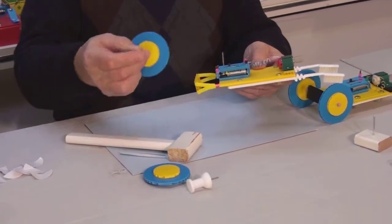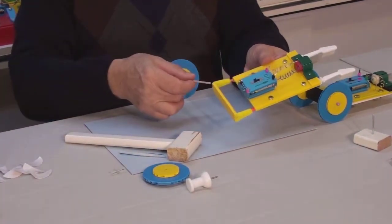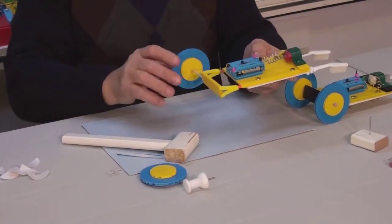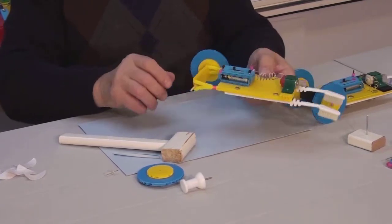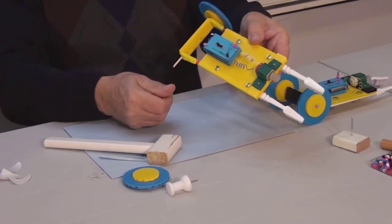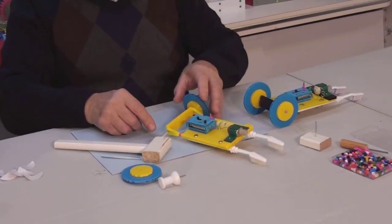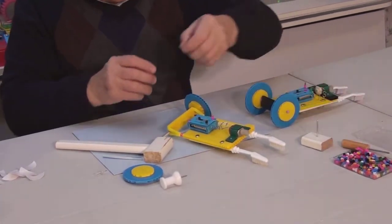Now we will take our half complete axle and insert it into the middle channel of our suspension plate. Place one more bead on this end of the axle.